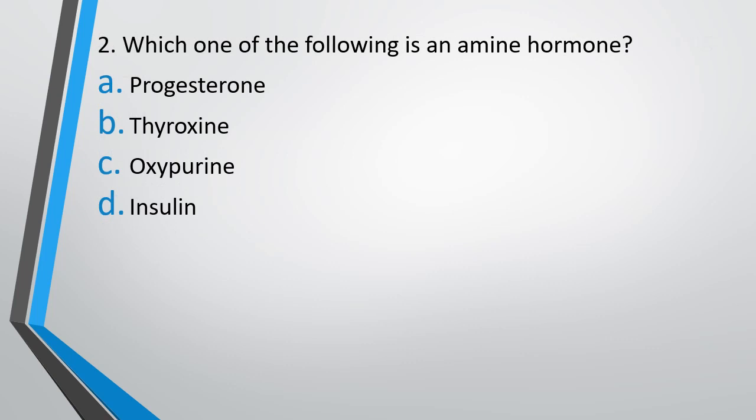Question number 2: Which one of the following is an amine hormone? Progesterone, thyroxin, oxypurine, or insulin? The correct answer is Option B — thyroxin is an example of an amine hormone.